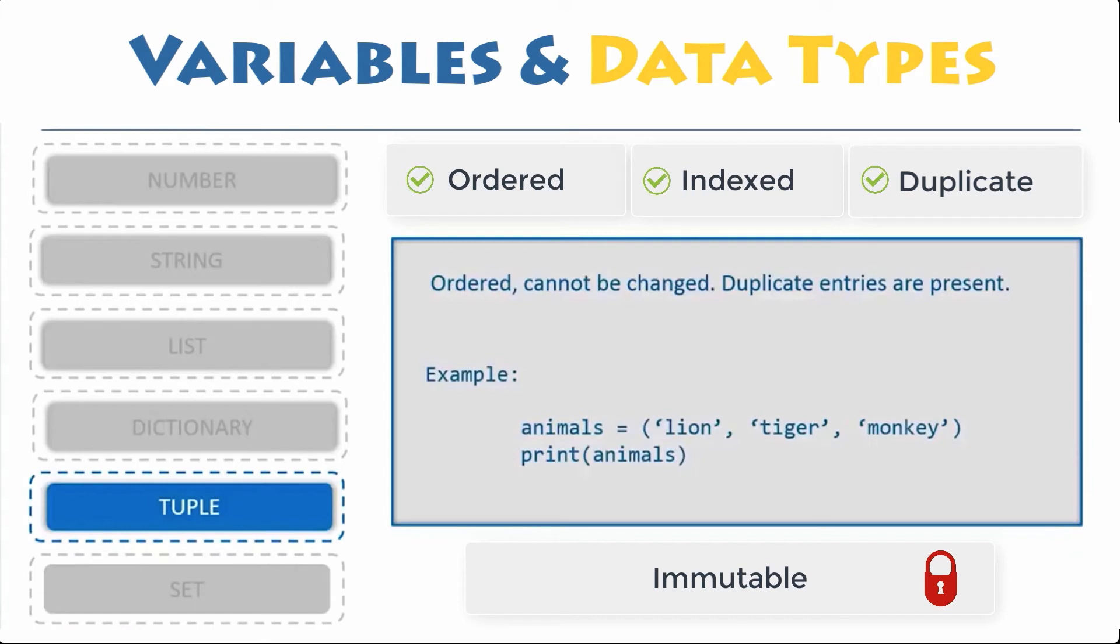Tuples can contain any number of elements and of any data type like strings, integers, list, etc. You can use the slicing operator to extract items but cannot change values.